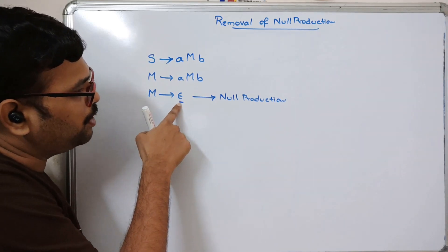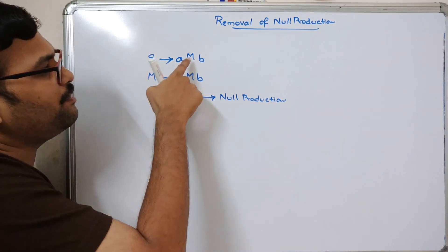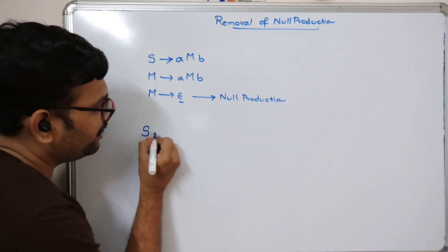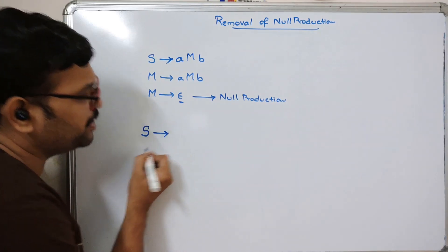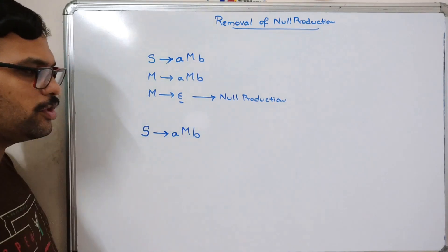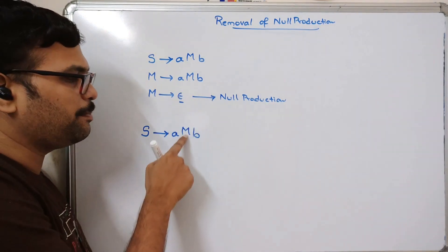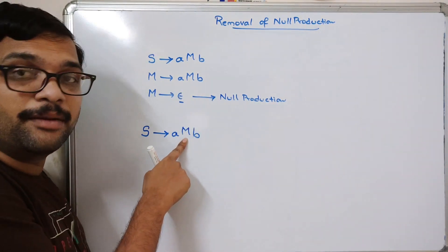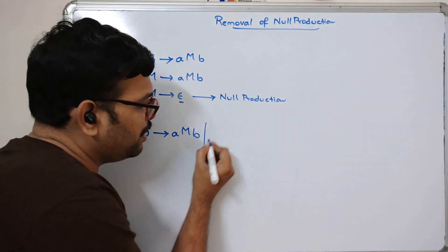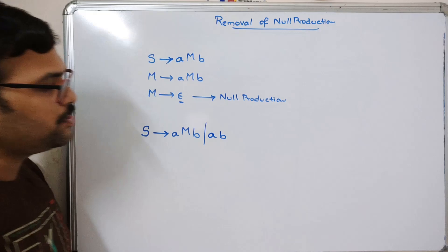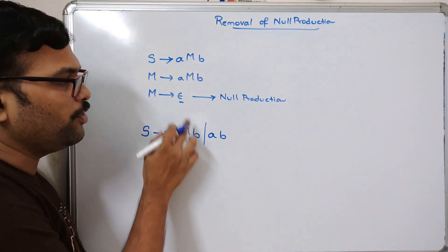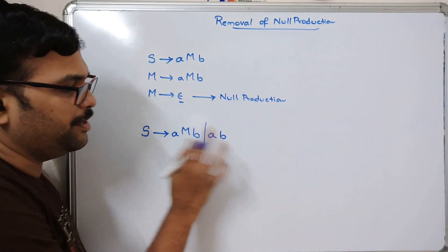In order to remove this null production, epsilon is for M — that is, M → ε — so you have to apply this epsilon wherever M appears in the production rules. For example, go with S and take all the combinations. First, write down the production — don't remove any production. Now apply epsilon in the place of M: if you apply epsilon in the place of M, we will get ab.